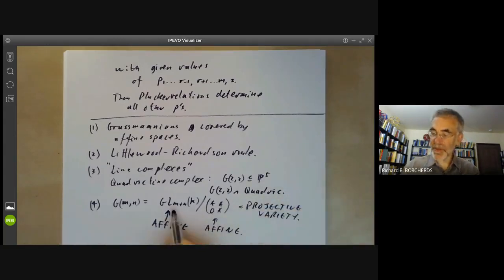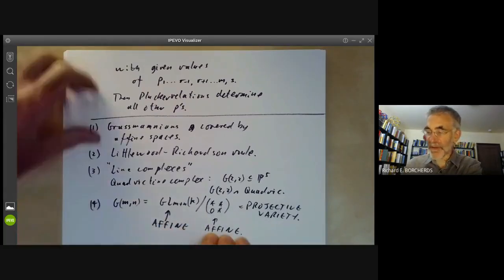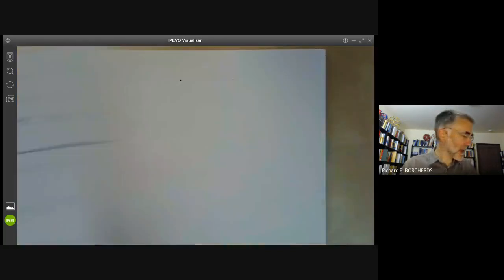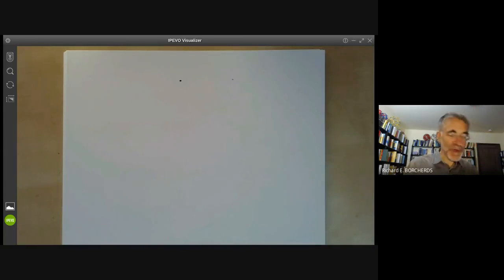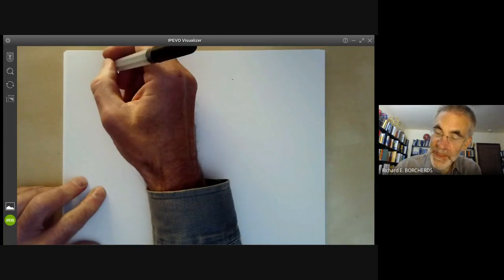So this shows the problem of taking quotients of algebraic groups by other algebraic groups is rather more complicated than you might guess because affine modulo affine doesn't always give you affine. In fact, the quotient of two affine varieties doesn't have to be either affine or projective.